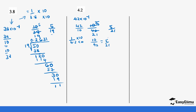After getting 5 over 21, we continue with the long division: 5 divided by 21. Since 5 is smaller than 21, we introduce a decimal place, giving us 50. Multiplying 21 by 2 gives 42, which is the closest. Subtracting 42 from 50 gives a remainder of 8.